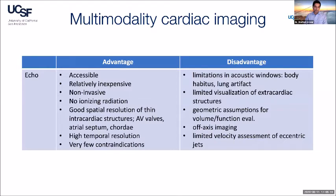We are fortunate in 2020 — we have several options. Echo, as we all know, is ubiquitous. Cardiac ultrasound is accessible, relatively inexpensive, non-invasive, and has no ionizing radiation. Echo provides great spatial resolution of very thin structures — some of the best ways to look at AV valves, atrial septum, chordae come from echocardiography. It also has high temporal resolution and very few contraindications. However, as patients get larger, there are limitations in acoustic windows due to body habitus, and lung can get in the way.